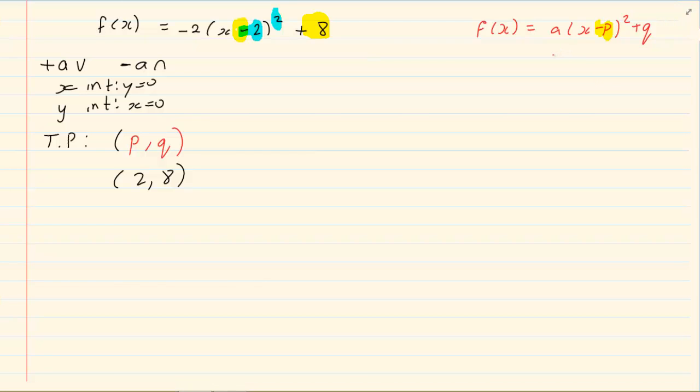If I had just for interest sake (x plus 2) all squared plus Q, the turning point then would be minus 2. Why? Because it is x minus minus 2 all squared plus Q. Now x and minus is from the equation, so the P is minus 2. Can you see the x and the minus?